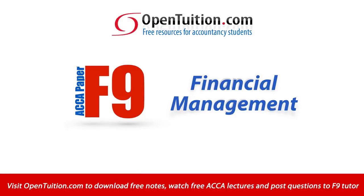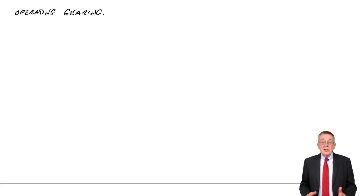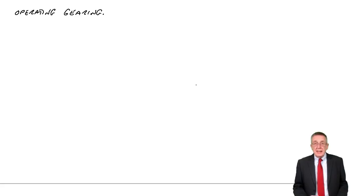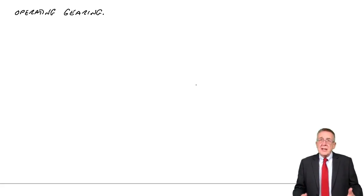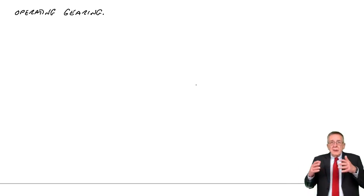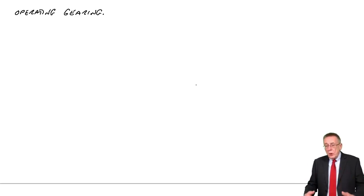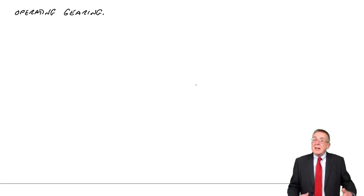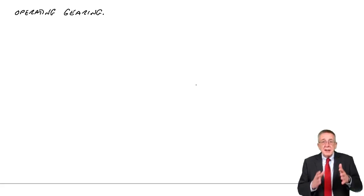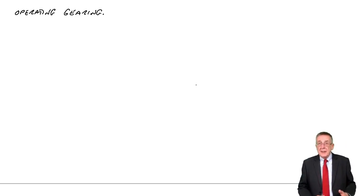This is a lecture from Open Tuition. To benefit from the lecture, you should download the free lecture notes from opentuition.com. We're still looking at chapter 13 of the free lecture notes of paper F9. In the previous lecture, we looked at financial gearing, explaining how the way we raise finance can create more risk for the shareholders. The more debt finance we raise, there is more risk to shareholders because of the fixed interest that's payable each year.